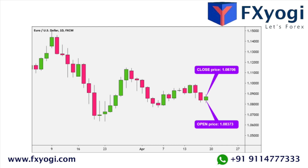For beginner traders, this means that the trend is easier to see. For experienced traders, Heiken Ashi charts help keep them in trending trades while still being able to see classical chart pattern setups. Heiken Ashi candlesticks look similar to traditional Japanese candlesticks, but they are different — so don't confuse the two.